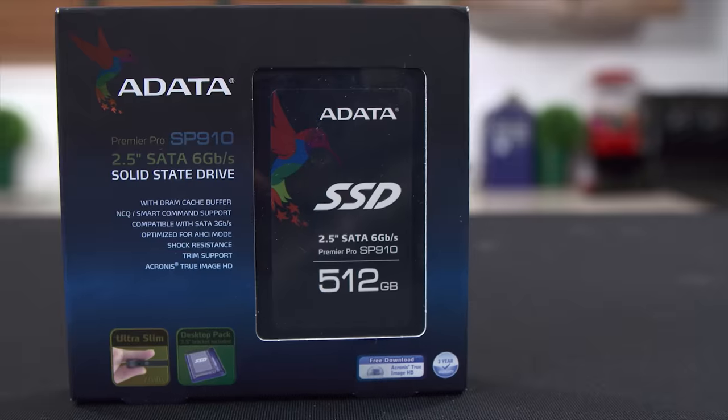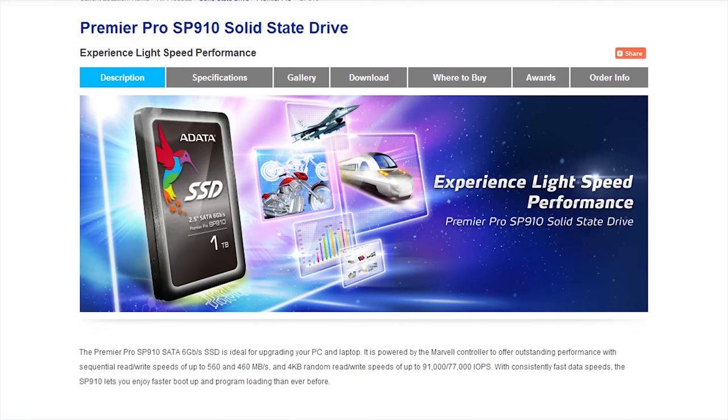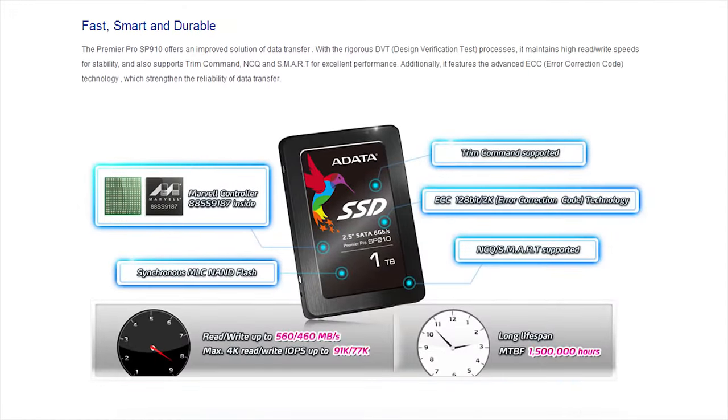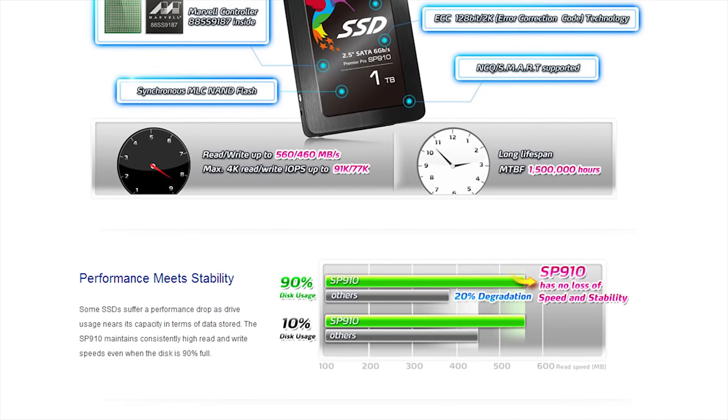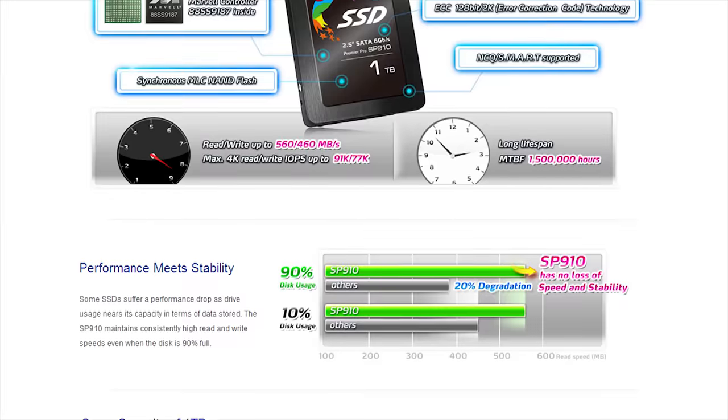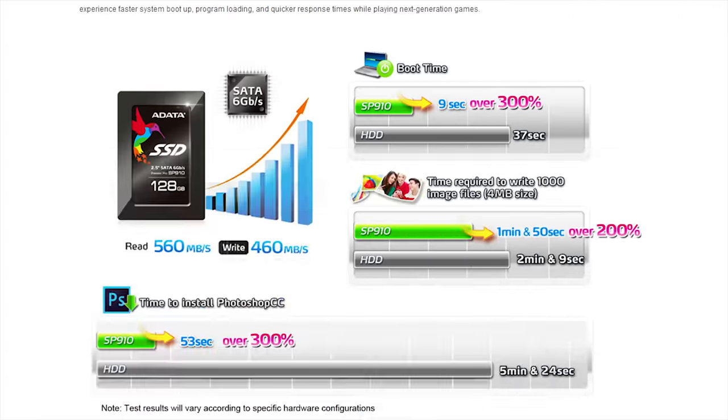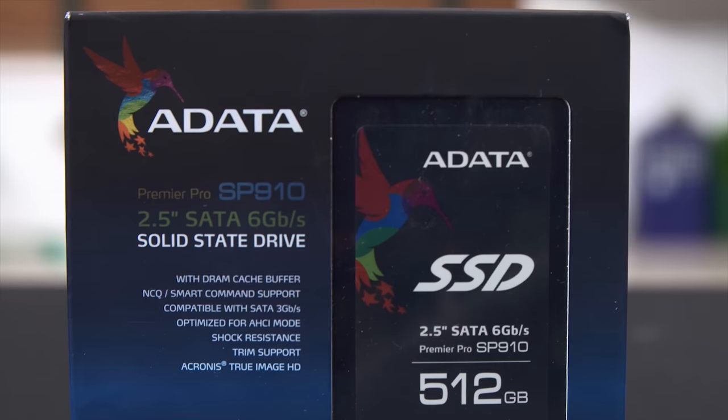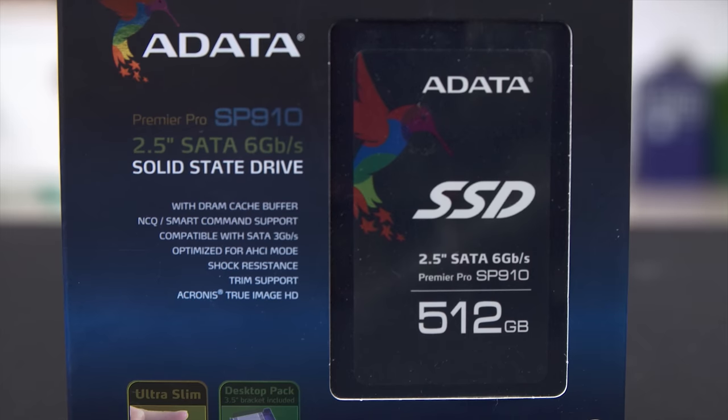Featuring their SP910 series of SSDs. Their Marvell controller offers outstanding performance with sequential read and write speeds of up to 560 and 460 megabytes per second, and 4K random read and write speeds of up to 91,000 and 77,000 IOPS, which means a massive performance improvement over your hard drive out of the box, and thanks to support for TRIM and SMART, great performance and reliability over time as well.